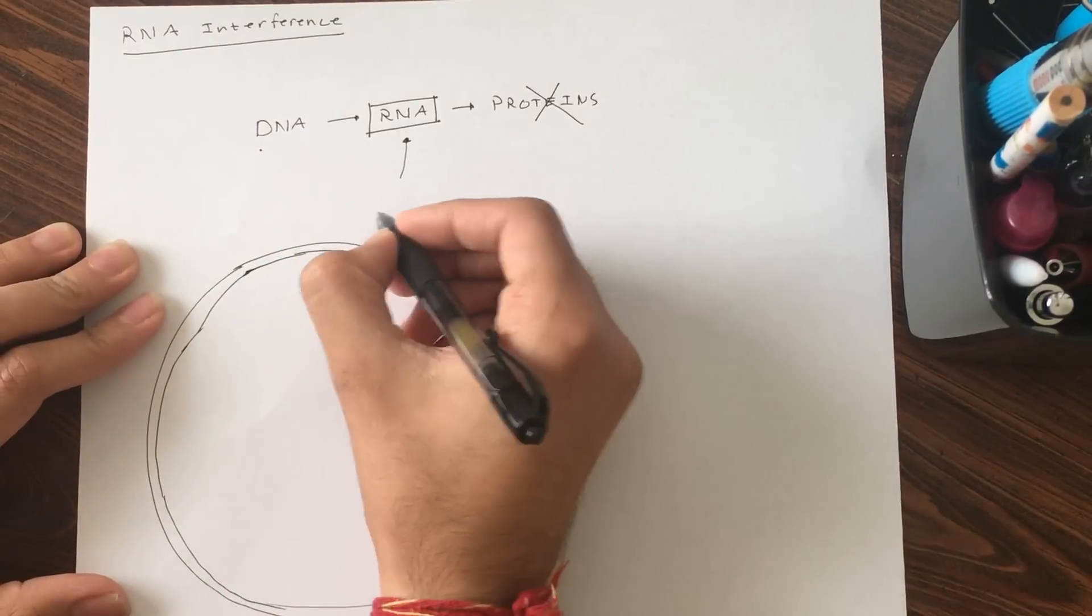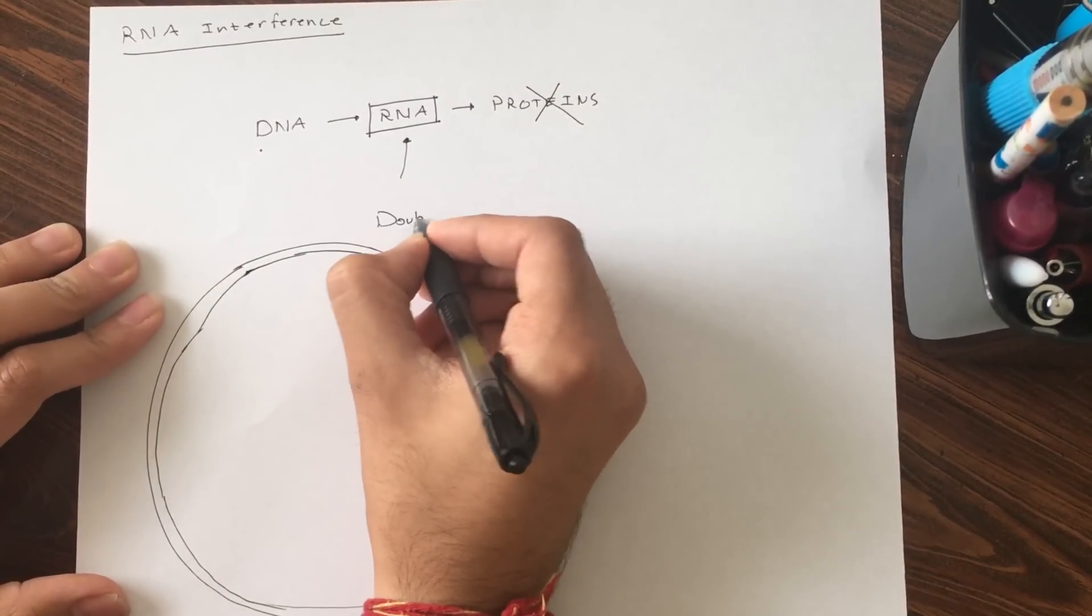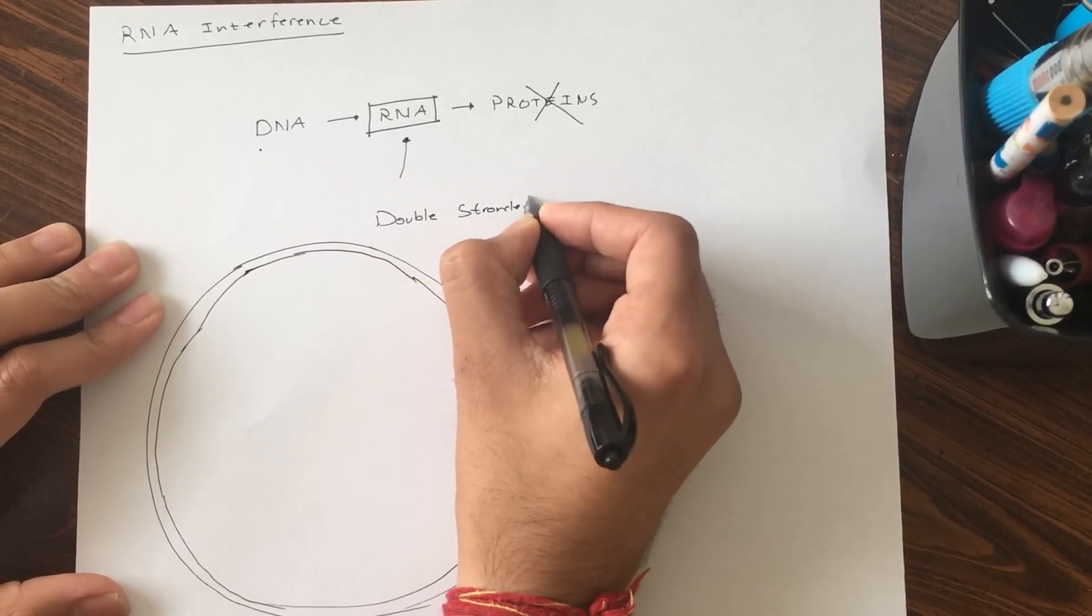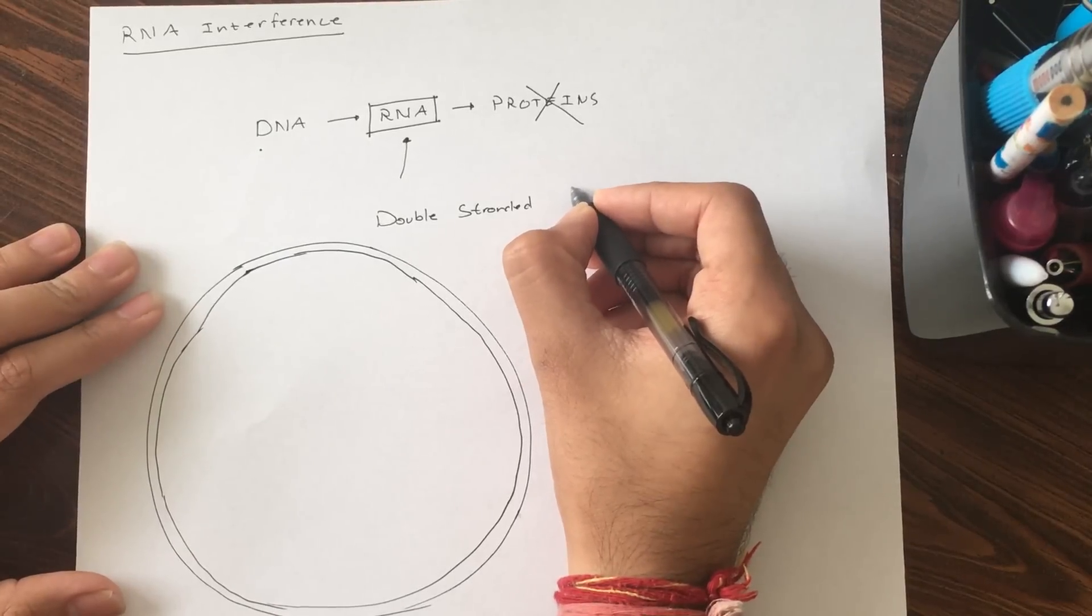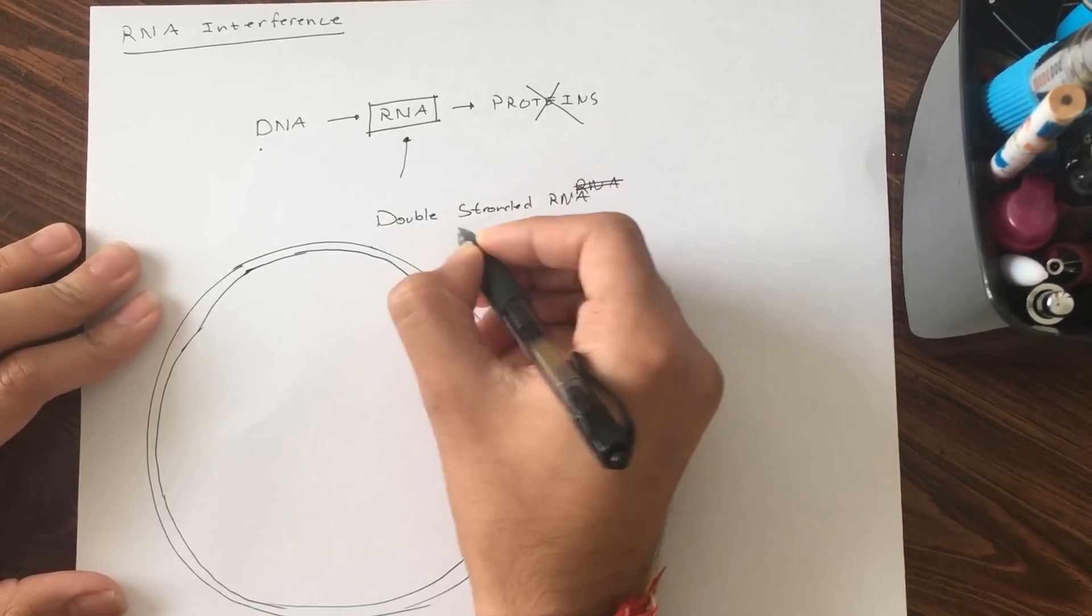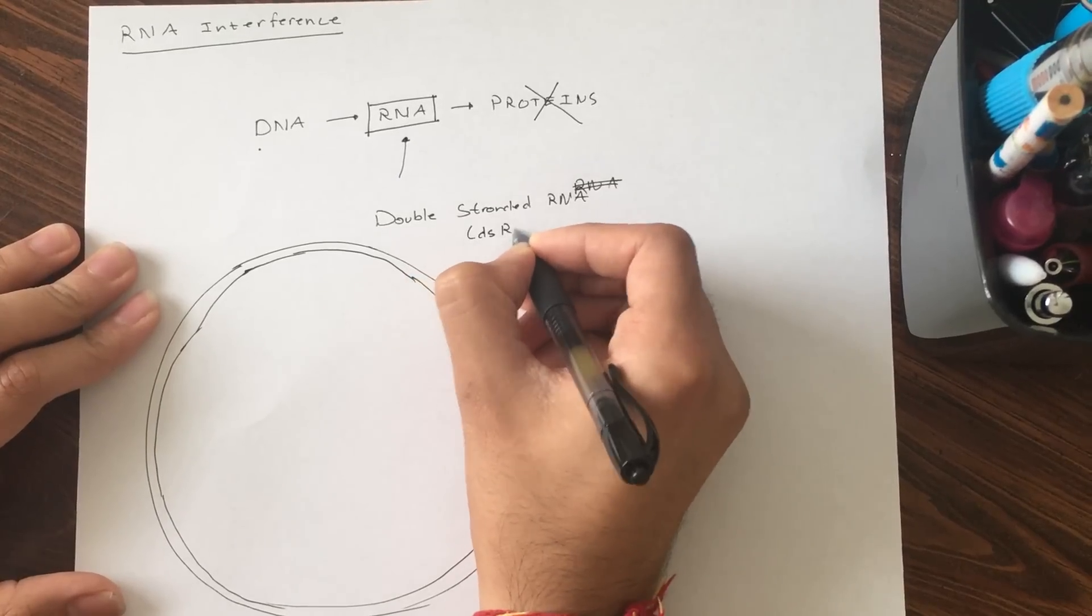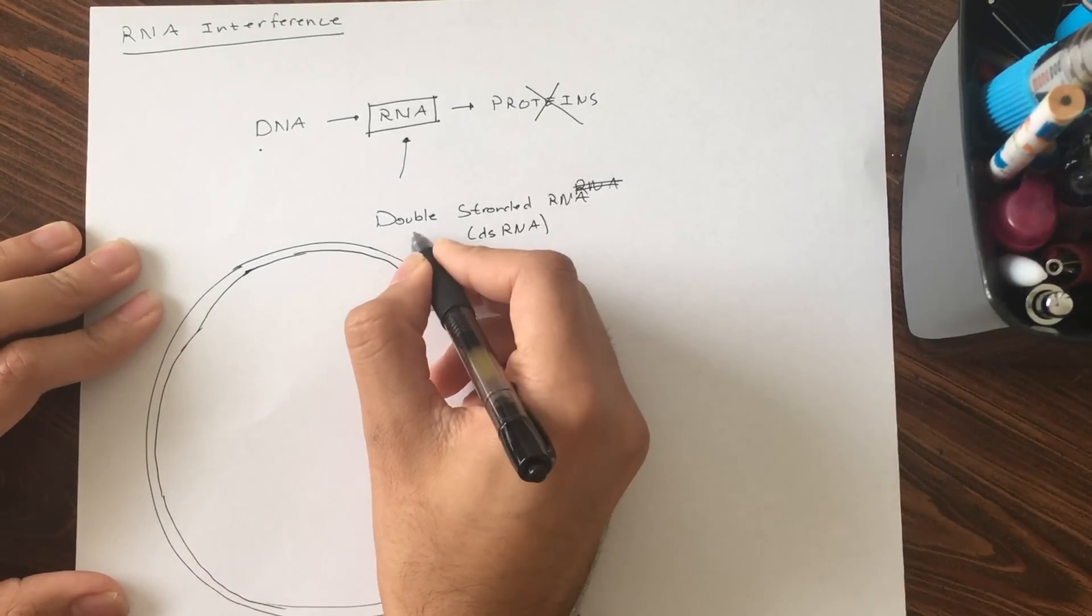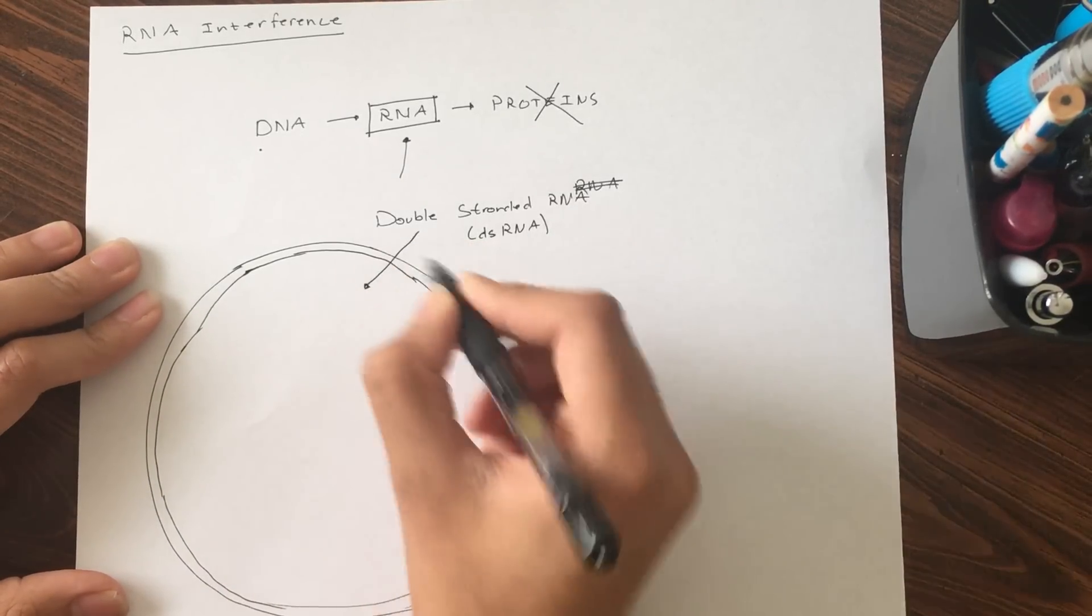First, you have this thing called a double-stranded RNA molecule, or dsRNA. What that does is it passes the membrane and gets into the cell's cytoplasm.